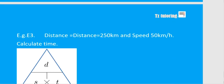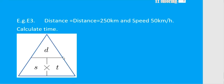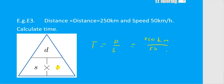Finally, to calculate time, cover T in the DST triangle, leaving distance over speed. Distance is 250 kilometers and speed is 50 kilometers per hour. 250 divided by 50 is 5, the kilometers cancel, and your answer is 5 hours. Those are some of the basic operations you're expected to know.